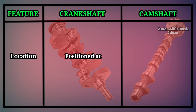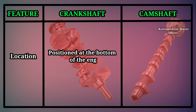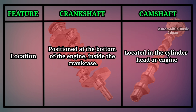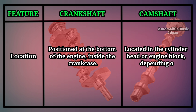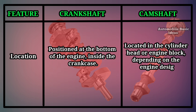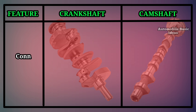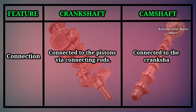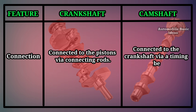Location: The crankshaft is positioned at the bottom of the engine inside the crankcase. The camshaft is located in the cylinder head or engine block, depending on the engine design. Connection: The crankshaft is connected to the pistons via connecting rods. The camshaft is connected to the crankshaft via a timing belt, chain, or gears.